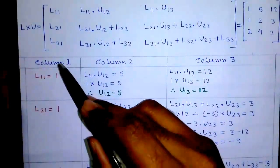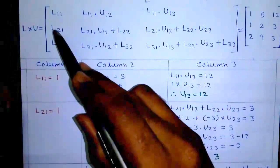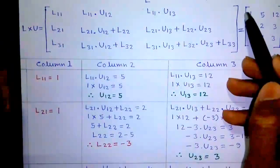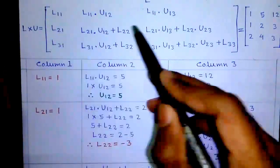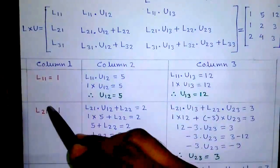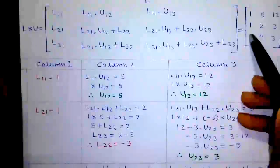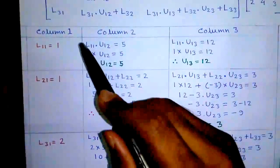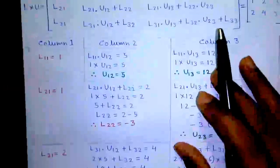Let's form a table. Column 1: L11 equals 1, L21 equals 1, L31 equals 2. Column 1 is done.